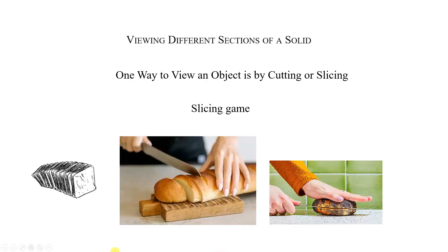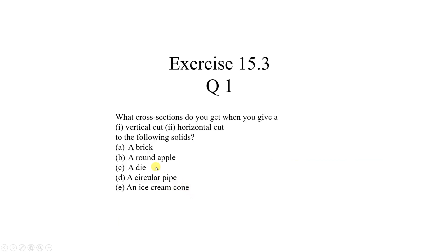For example, when you get a bread loaf — that is bread — inside the bread you get different cuts, a slice, sliced bread. In that sliced bread, the white part you see is nothing but a cross section. The inside part what you are seeing is called cross section. We have to tell which kind of shape that cross section looks like.